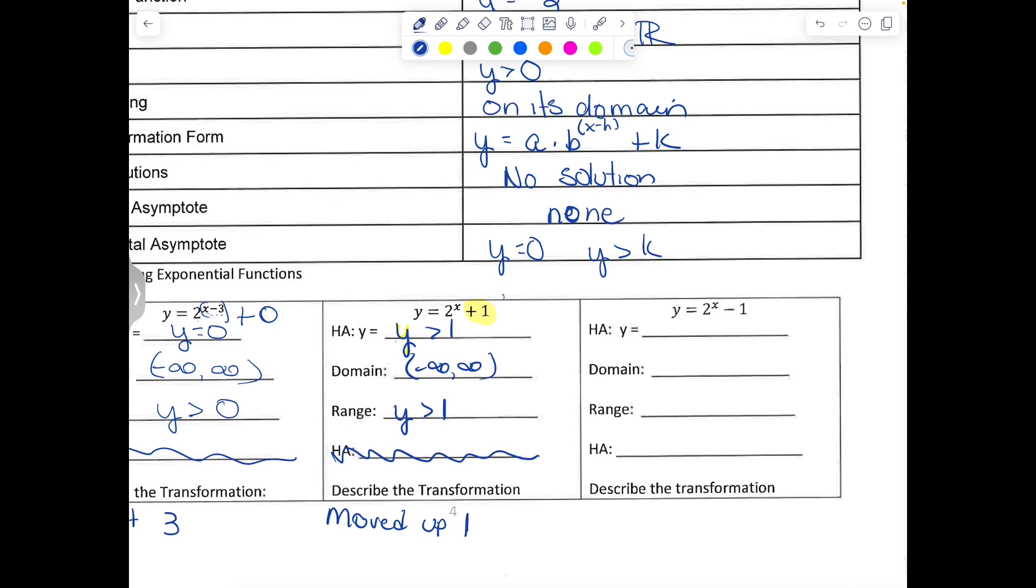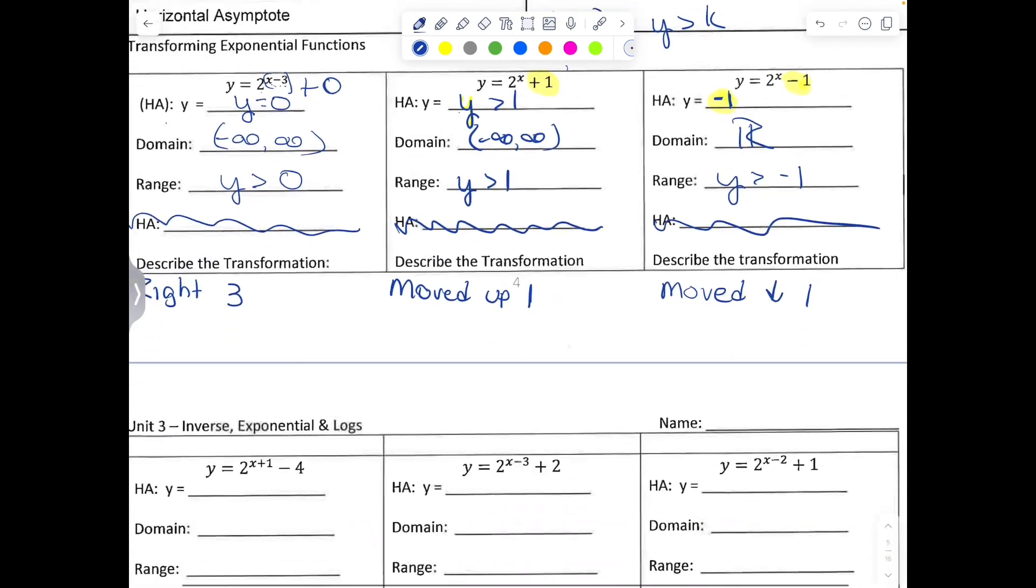All right, if you want to pause the video and try the next one, that would be great. Come back and I'll explain the answers. Okay, welcome back. So we can see that the horizontal asymptote is going to be y is negative 1. The domain is all real numbers. The range is y is greater than negative 1. And this is move down 1.